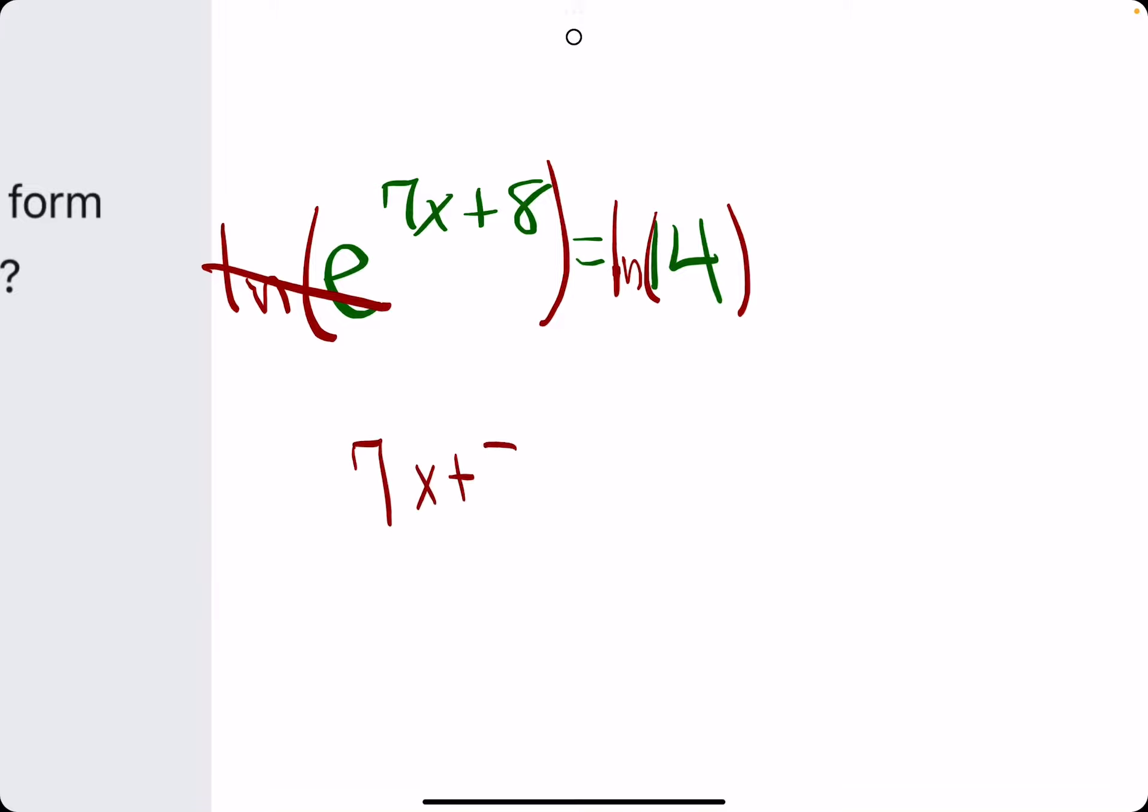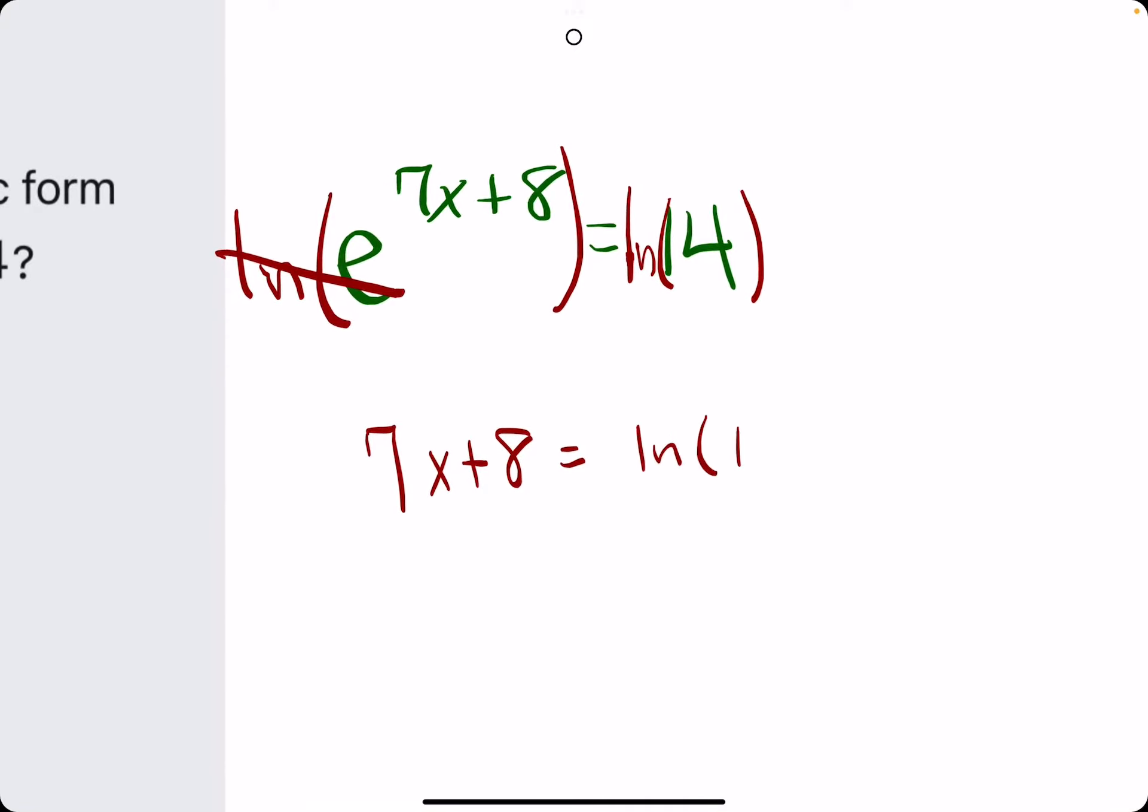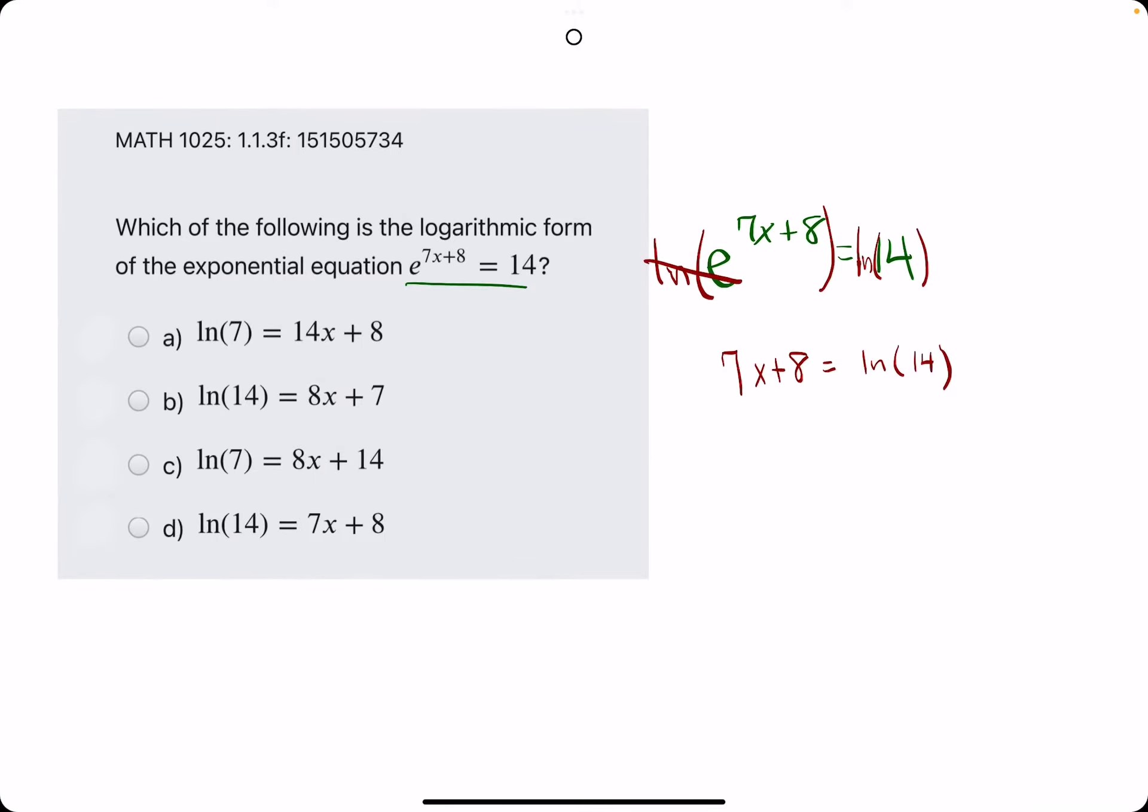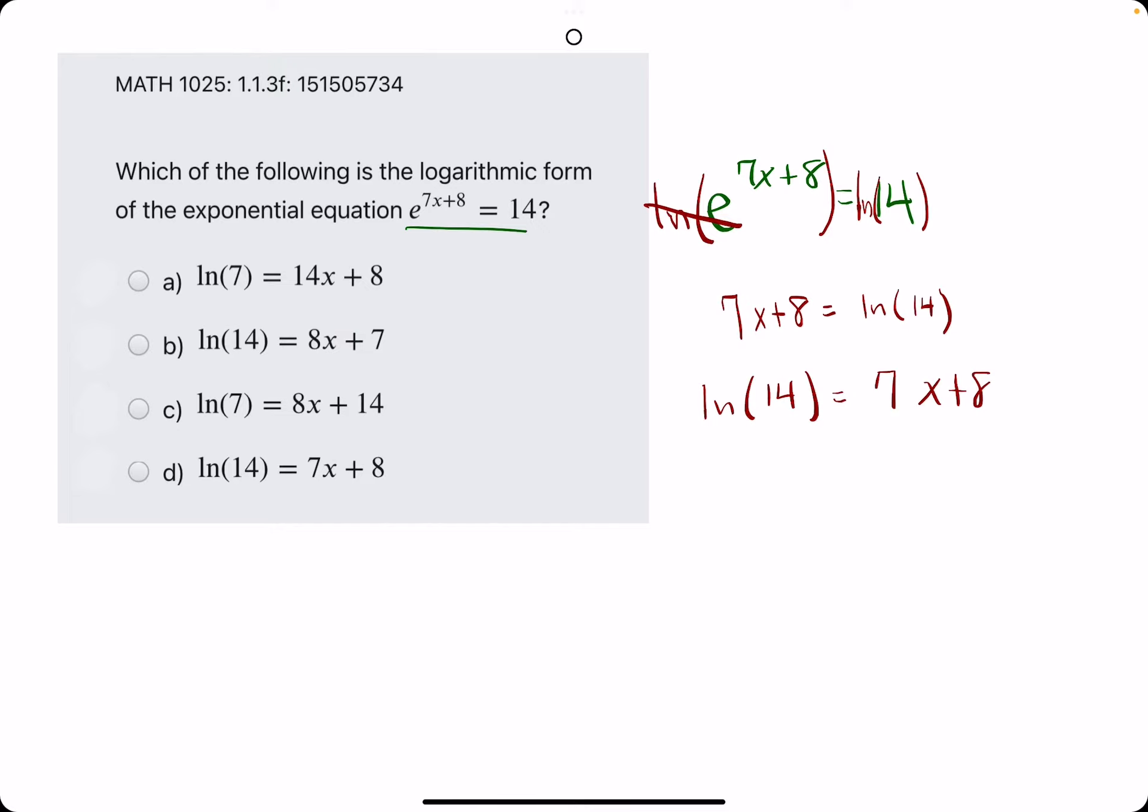Leaving us with just 7x plus 8 on the left side and on the right side we have ln of 14. So just flipping this equation around, we are left with ln of 14 equals 7x plus 8. So we can eliminate the ones with ln of 7 and then we identify d as our correct answer.